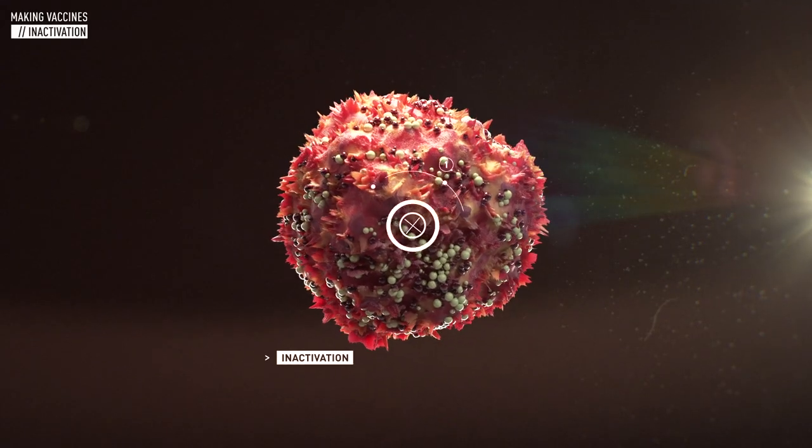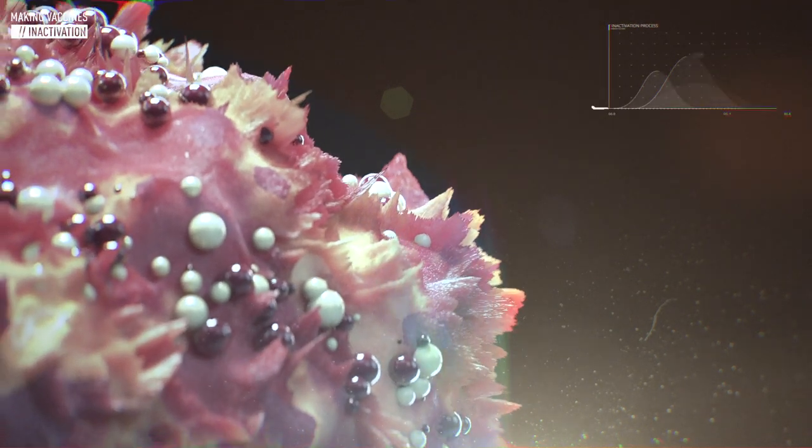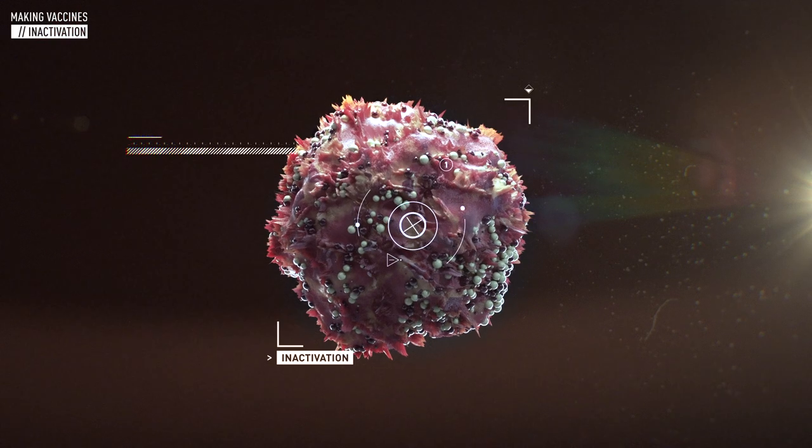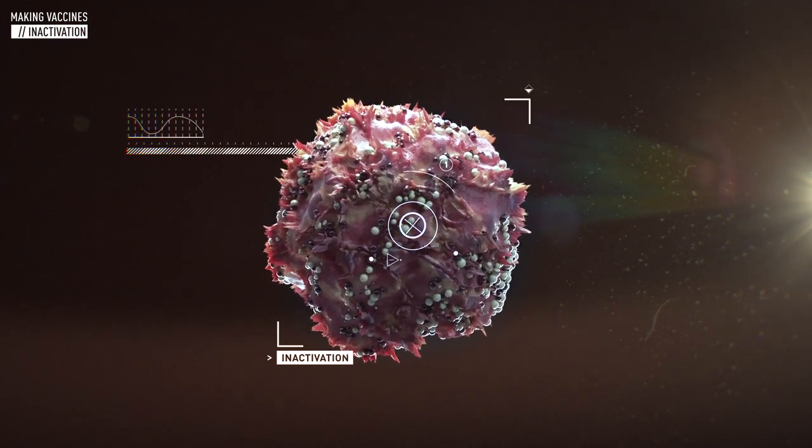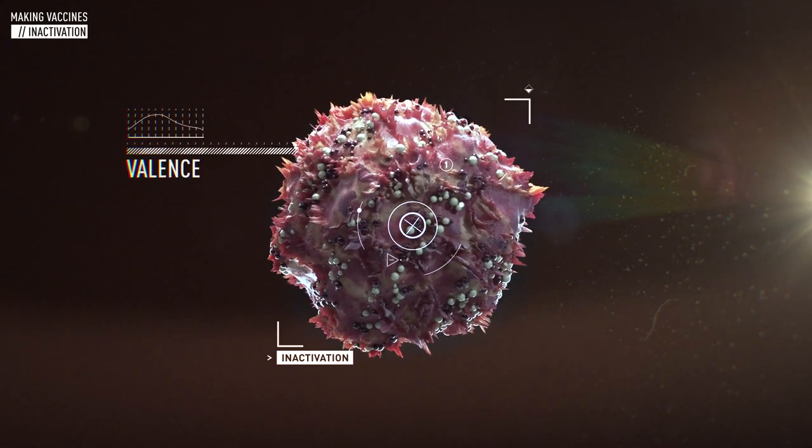We then inactivate the virus or bacteria. That means we eliminate its ability to cause disease. We disarm it. But we retain its ability to elicit a precautionary immune response from the body. The inactivated virus or bacteria is called a valence.